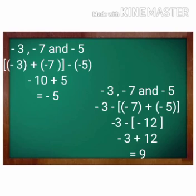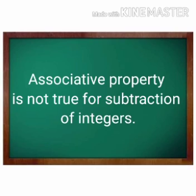Therefore, the answers are not the same. When the groups are changed and subtracted, their results are different. Therefore, associative property is not true for subtraction of integers.